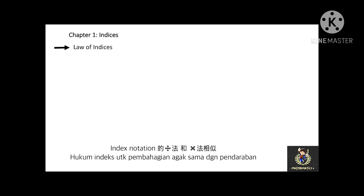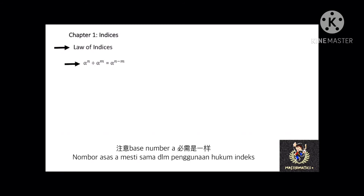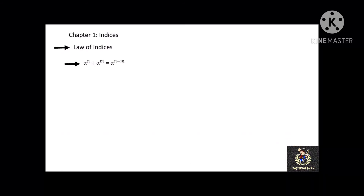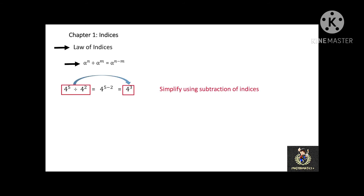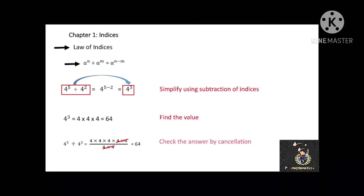The division of index notation is also similar to multiplication. Alpha to the power of n divided by alpha to the power of m equals alpha to the power of n minus m. Make sure both index notations have the same base number. For example, 4 to the power of 5 divided by 4 to the power of 2. Using subtraction of indices, this equals 4 to the power of 5 minus 2, which is 4 to the power of 3, equal to 64. You can also check your answer by the method of cancellation and get the same answer: 64.